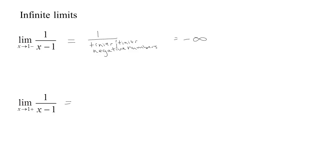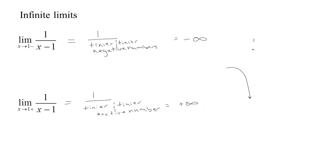On the other hand, if x goes to 1 from above, then x minus 1 is always positive. As x gets closer and closer to 1, these numbers are tinier and tinier positives. So we have 1 divided by tinier and tinier positive numbers — positive divided by positive — and the limit is positive infinity. Since approaching from the left gives negative infinity and from the right gives positive infinity, they don't agree. Just being close to 1 doesn't determine the sign, so this limit does not exist.